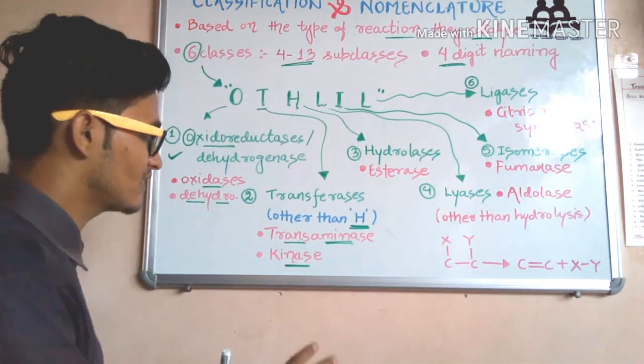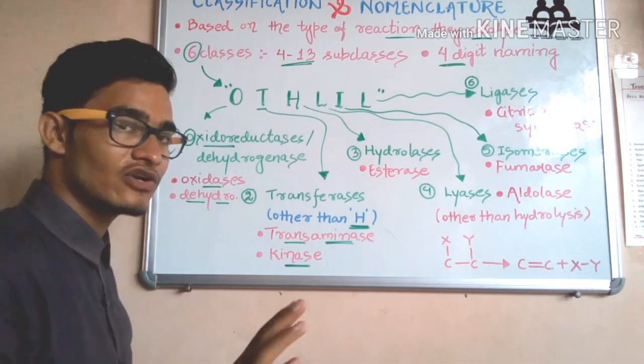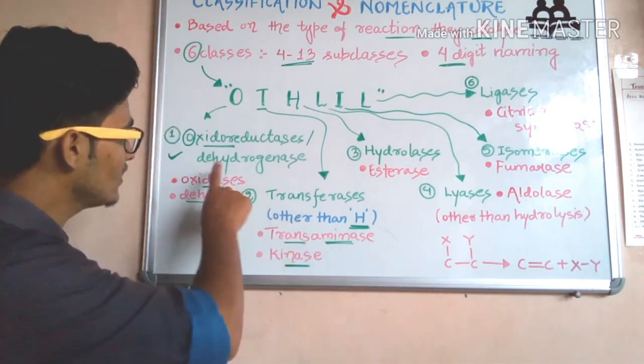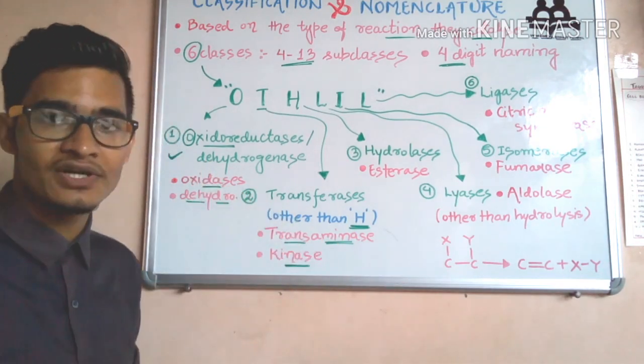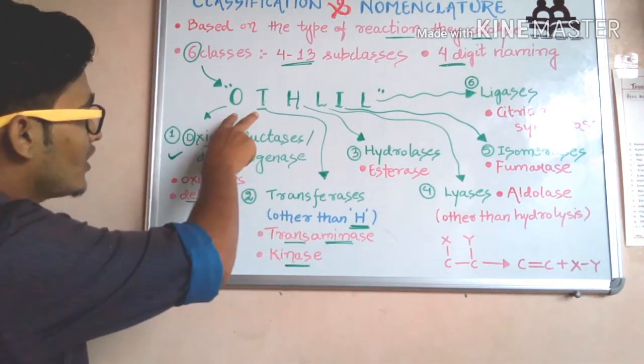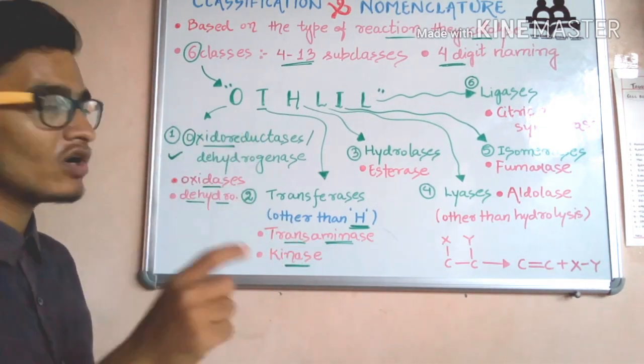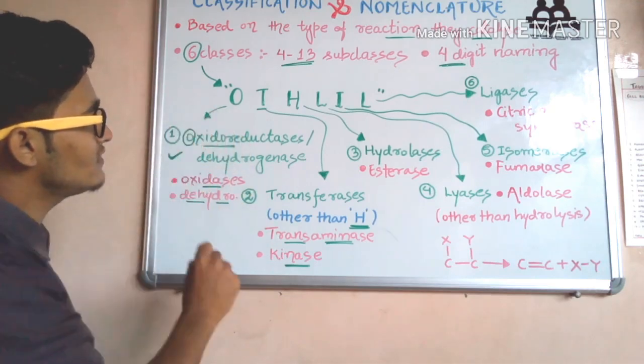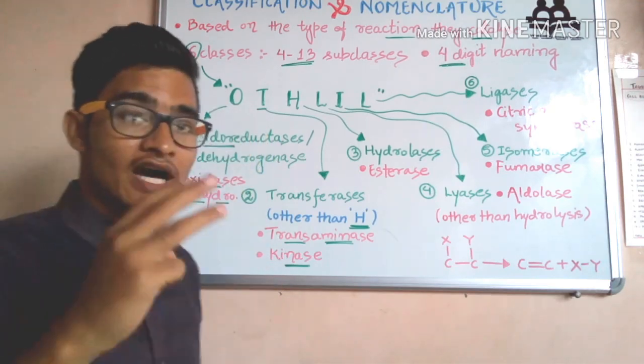This makes quite simple sense. If hydrogen transfer is involved, it would be oxidation-reduction. So we have now talked about two classes: oxidoreductases and transferases.